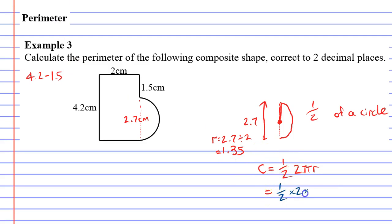So we've got half times 2 times pi times r, r being 1.35. So let's work that out in the calculator. Half times 2 times pi times 1.35, which to two decimal places is 4.24 cm.